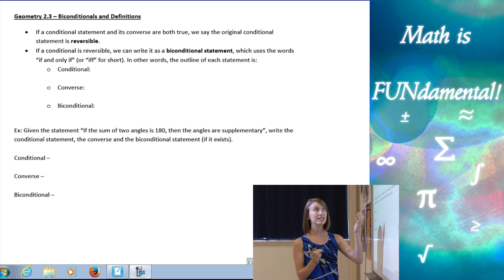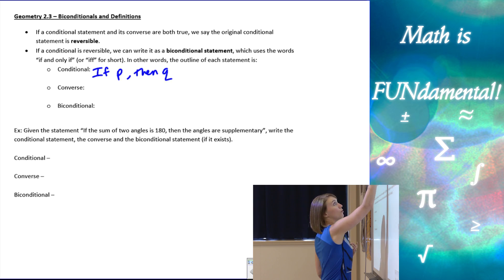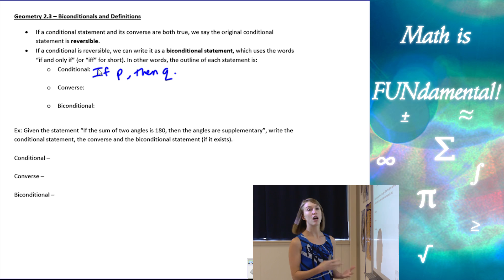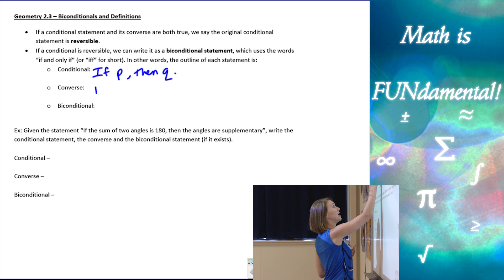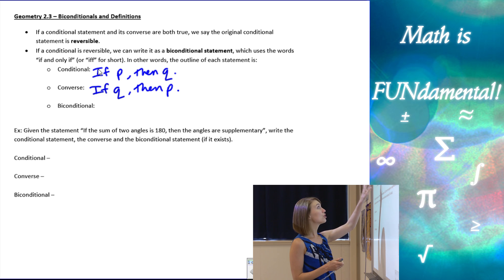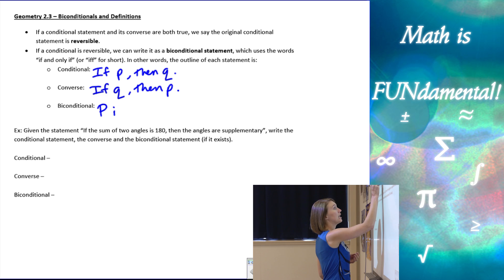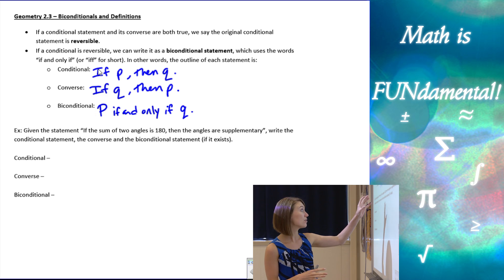So let's look at this. If our conditional statement is "if P" — where P stands for some hypothesis — "then Q," where Q is some conclusion, our converse statement is when we switch the P's and Q's, switching the hypothesis and conclusion: "if Q, then P." Our biconditional statement, if both of those are true, is the hypothesis if and only if our conclusion. Notice it doesn't start with the word "if" — it actually goes in the middle.